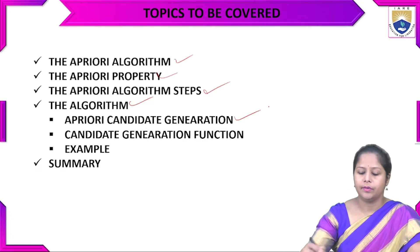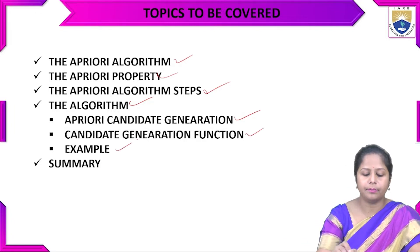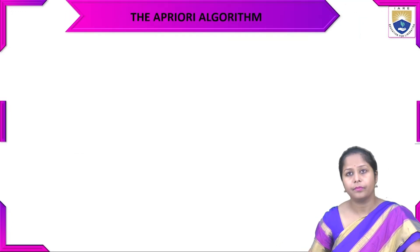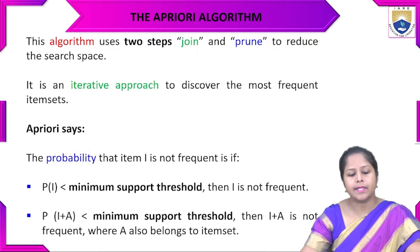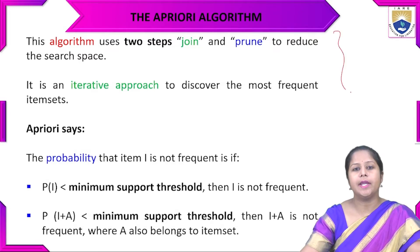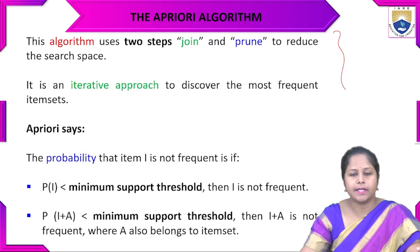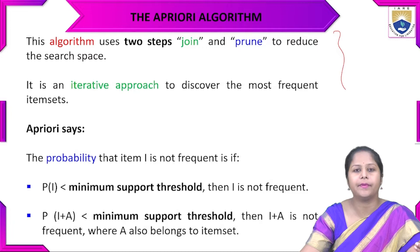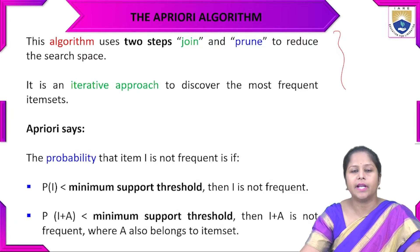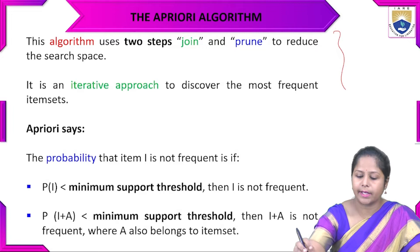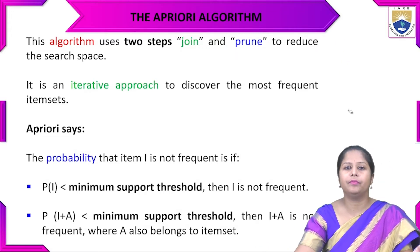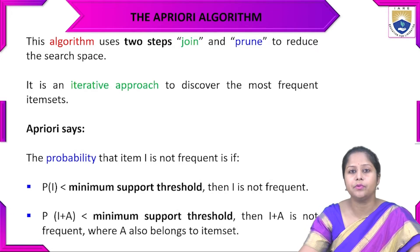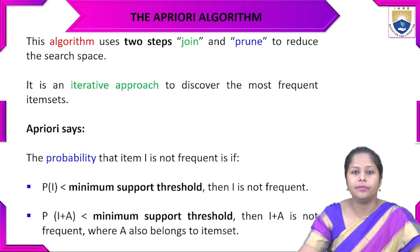The Apriori algorithm uses two steps — join and prune — to reduce the search space. It is an iterative approach to discover the most frequent item sets. In each iteration, we join frequent item sets together and prune others that do not meet the frequency threshold.